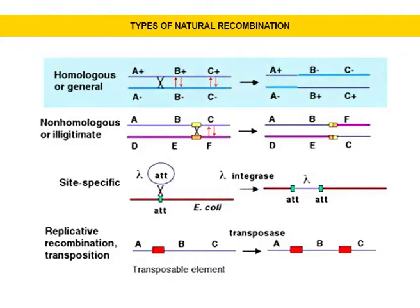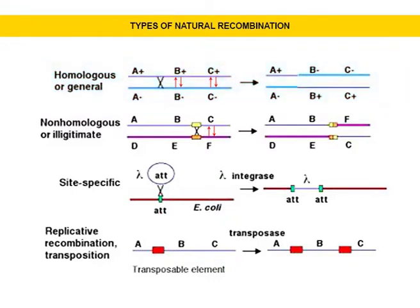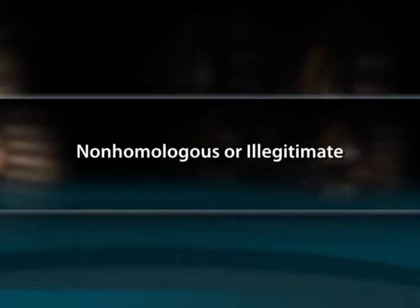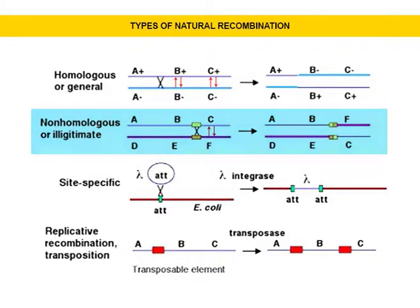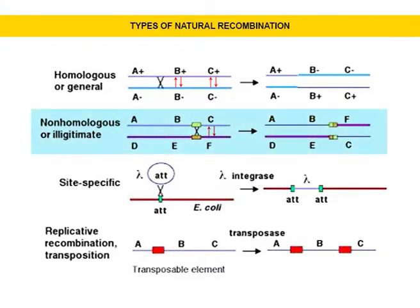General recombination can occur throughout the genome of diploid organisms using one or a small number of common enzymatic pathways. It can be used to direct error-free repair of double stranded DNA breaks and generate sequence variation in gametes during meiosis. The second one is non-homologous or illegitimate recombination, which occurs in regions where no large scale sequence similarity is apparent. For example, translocations between different chromosomes or deletions that remove several genes along a chromosome.